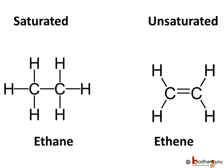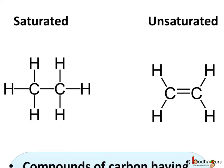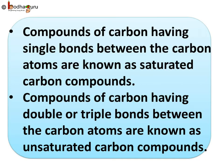If such a bond occurs in a carbon compound, it is called an unsaturated carbon compound. Here we see an unsaturated carbon compound which is called ethene. Compounds of carbon having single bonds between the carbon atoms are known as saturated carbon compounds, like ethane or methane, and saturated compounds are normally not very reactive. Whereas compounds of carbon having double or triple bonds between the carbon atoms are known as unsaturated carbon compounds — for example, ethene — and generally, unsaturated carbon compounds are very reactive.